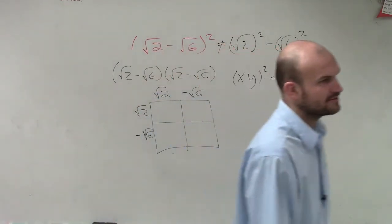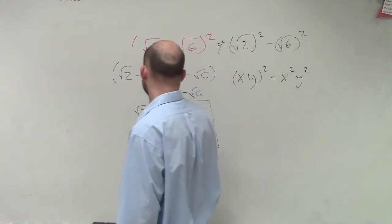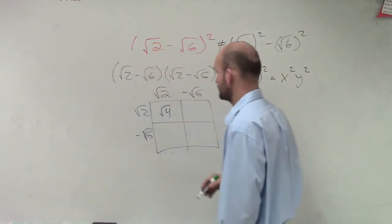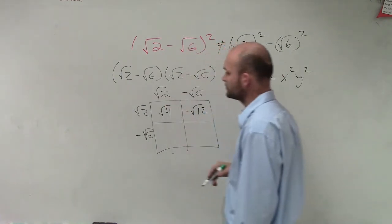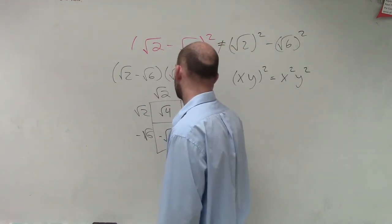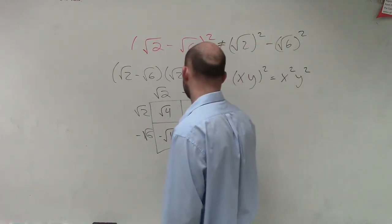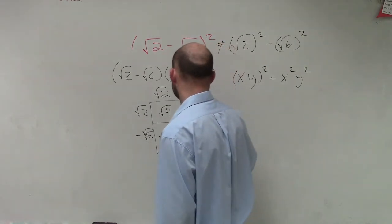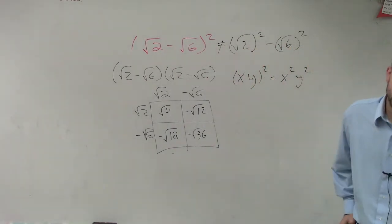Then we just take our length times width to multiply to find the area of each box. The square root of 2 times the square root of 2 is the square root of 4. The square root of 2 times negative square root of 2 is negative square root of 12. The square root of 2 times negative square root of 6 is negative square root of 12. Negative square root of 6 times negative square root of 6 is negative square root of 6 squared. All right, let's just do 36.